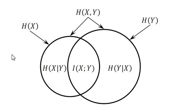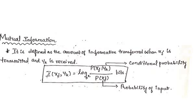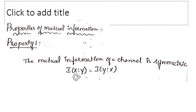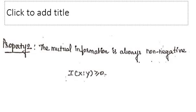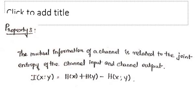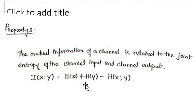Let me summarize. In this video we saw what is mutual information and its definition. Then we saw the three properties: mutual information of a channel is symmetric; mutual information is always non-negative; and the mutual information of a channel is related to the joint entropy of the channel input and output. Thank you for watching this video.